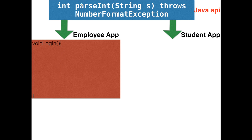This developer wants to use parseInt inside his login method. The parseInt method accepts a string as its argument, and he is passing '101' as a string — that is his employee ID. parseInt will convert this '101' string to an integer value of 101.